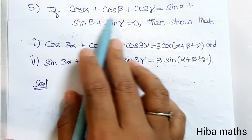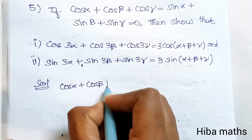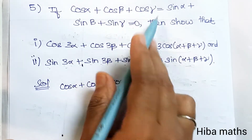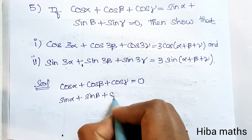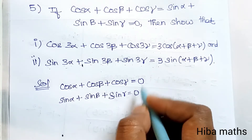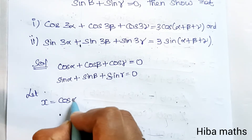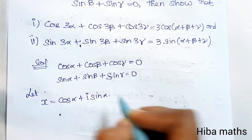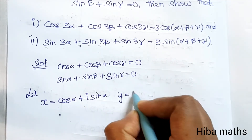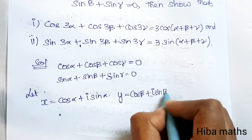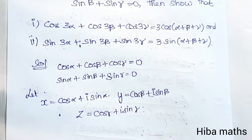Solution: Let's write the model. Let x = cos α + i·sin α, y = cos β + i·sin β, z = cos γ + i·sin γ. This is the setup.